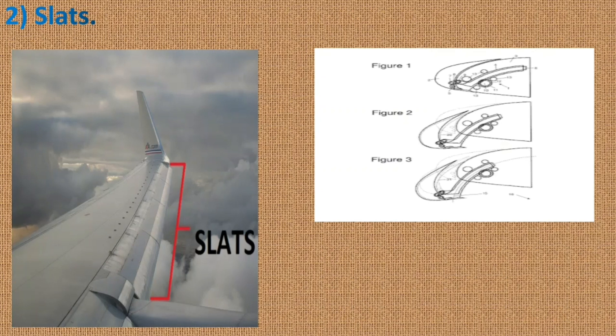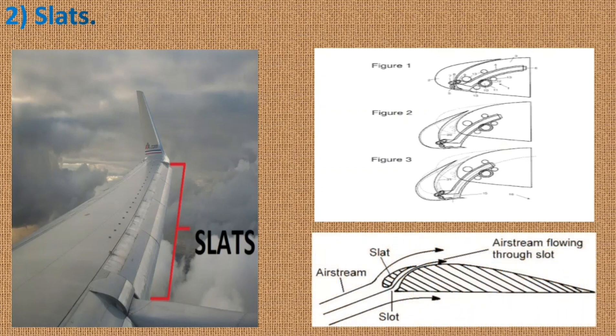In contrast to Kruger flap which increases wing camber by extending a panel from the lower surface of the wing, when the slat is extended, it creates a slot and the high pressure air from the lower side of the wing goes to the upper side of the wing and re-energizes the boundary layer and helps to delay stalling. So this is all about flaps and slats fitted on the aircraft wing.